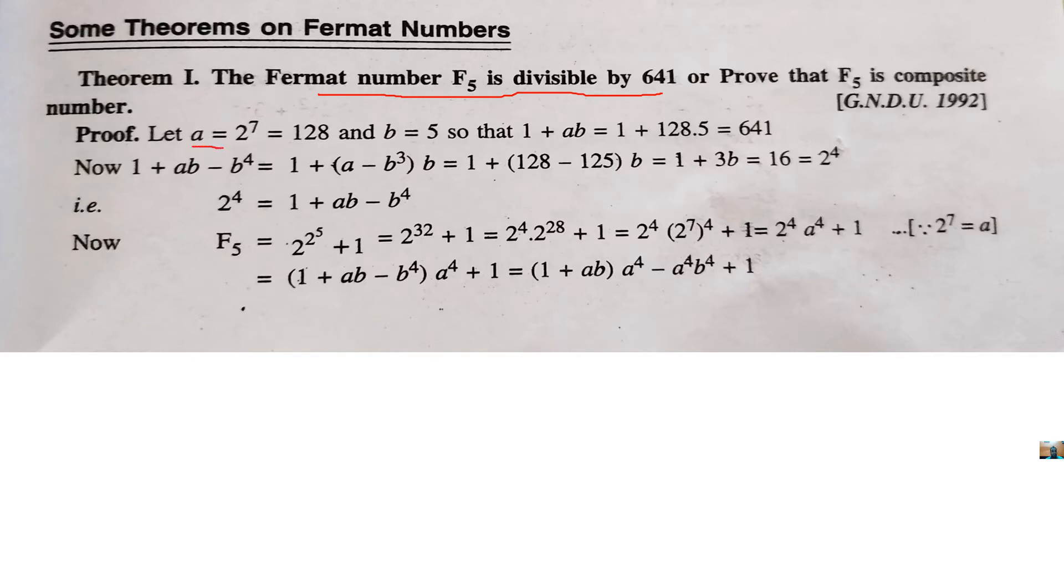Let us take a is equal to 2 raised to power 7 which is equal to 128 and take b is equal to 5. Now, take expression 1 plus ab that can be written as 1 plus, by using the value of a and b, we get 641. This is expression we have made for 641.